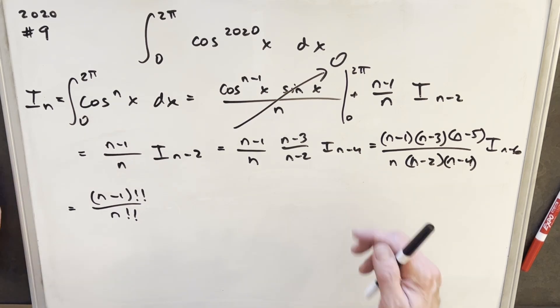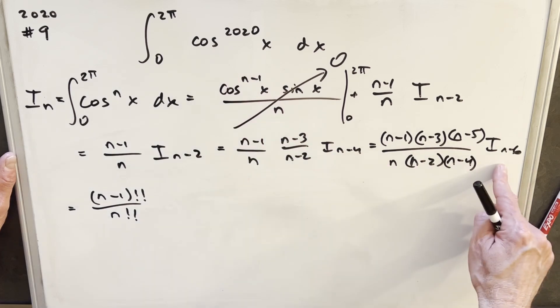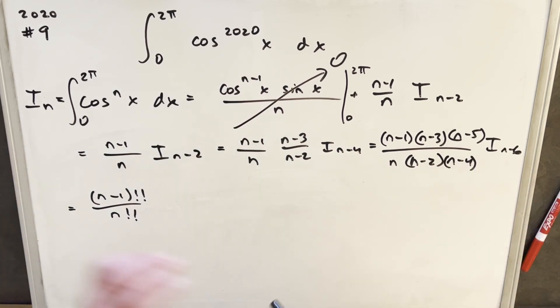And then that means our bottom term here in the denominator is going to be n double factorial. And then one thing I kind of skipped over, so like we have an even power here, and that's important, is if we keep reducing this down two at a time, we'll get this eventually down to i sub 2.